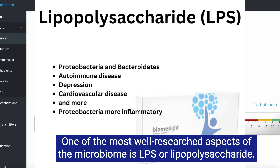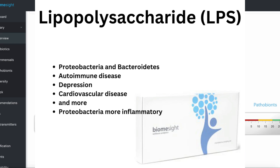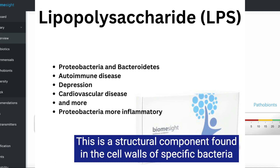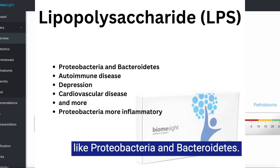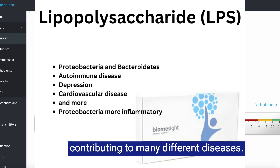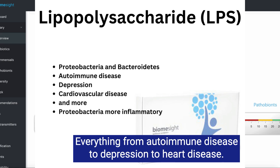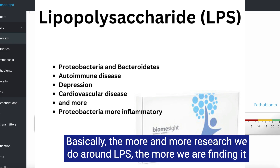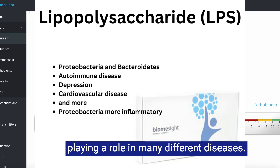One of the most well-researched aspects of the microbiome is LPS, or lipopolysaccharide. This is a structural component found in the cell walls of specific bacteria like proteobacteria and bacteroidetes. LPS is a toxin that interacts extensively with the human host, causing inflammation and contributing to many different diseases — everything from autoimmune disease to depression to heart disease. The more research we do around LPS, the more we are finding it playing a role in many different diseases.